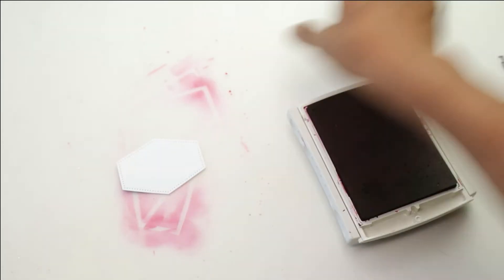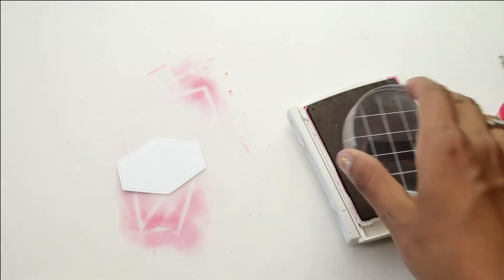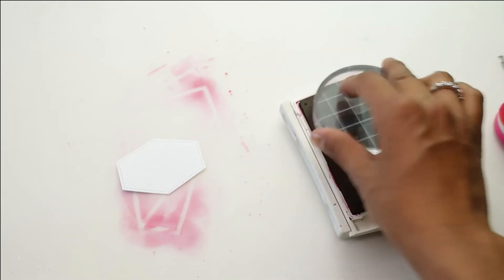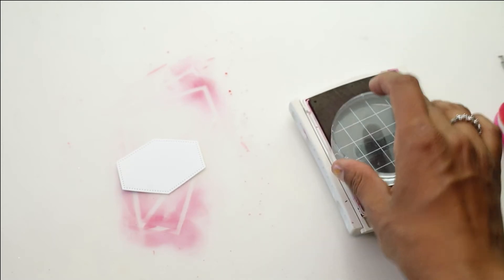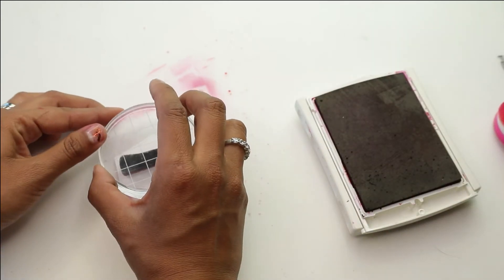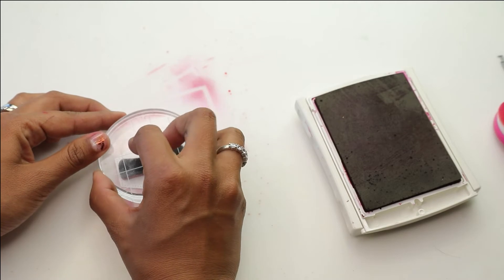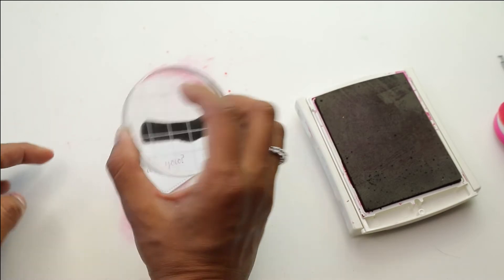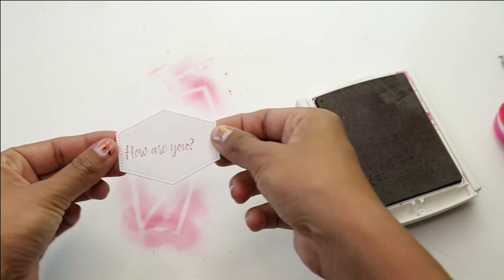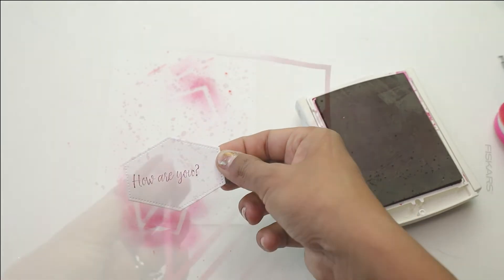We're gonna grab the other little die cut from earlier, and we're gonna be using the Grow in Grace sentiment that says, how are you? And like I mentioned, we are going to stamp using the same color. And try to center it best of your ability. And for me, that's kind of hard. And make sure you don't get any inky fingers on that.